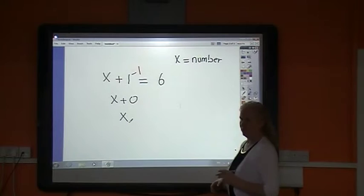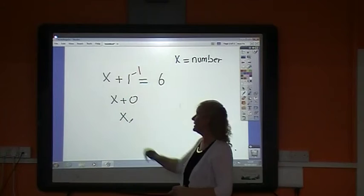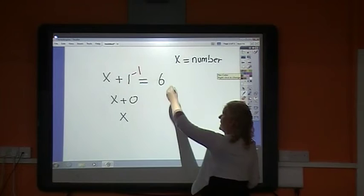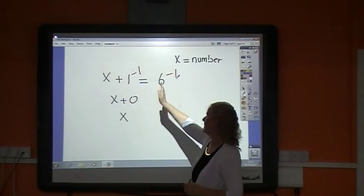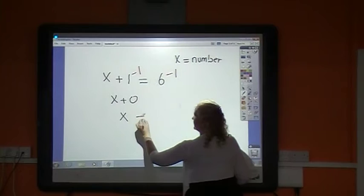But remember the weighing scales. If I took away a 1 from this side, I must take away 1 from this side for it to stay equal. So I have x left on this side and a 6 take away 1 on the other side, which is 5. And that's my solution.